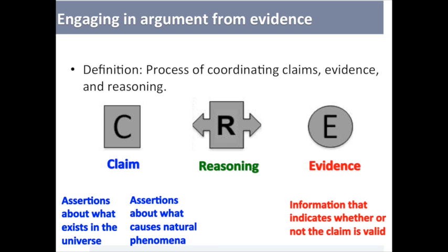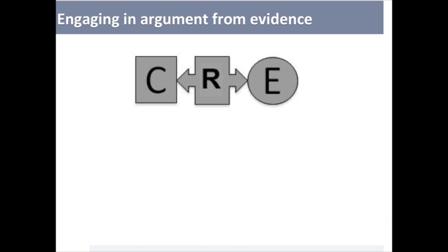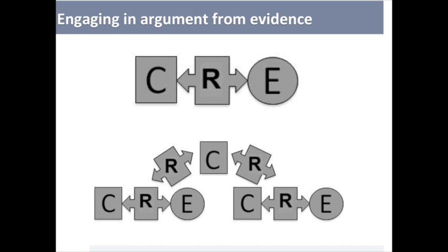Evidence is information that indicates whether or not the claim is valid. Reasoning is the explanation of how evidence supports the claim. A simple argument coordinates one claim and one piece of evidence with reasoning. We would like for students to progress in their argumentation abilities so they are coordinating multiple claims and pieces of evidence and reasoning.